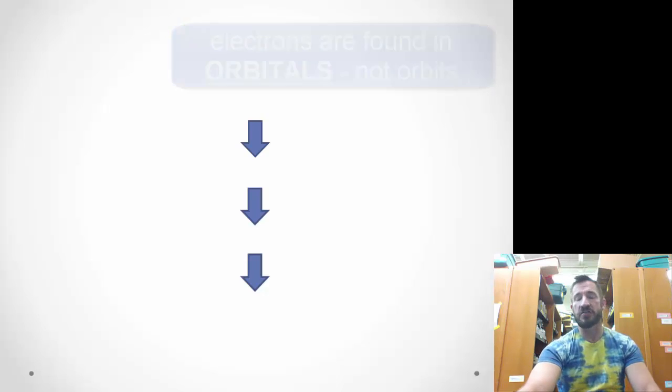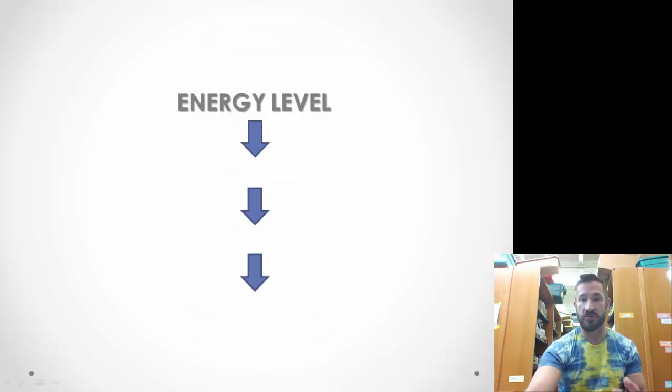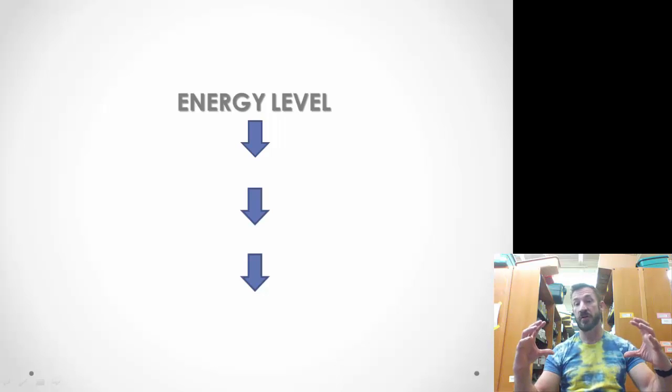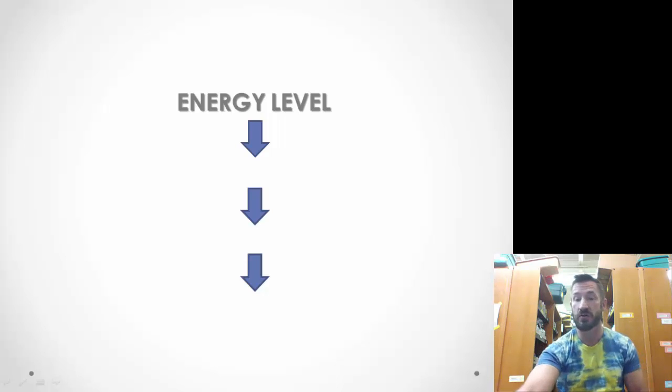Here are the levels or the order in which we'll go. First we have energy levels. That's how far or close it is to the nucleus. The lower the energy level, the closer to the nucleus; the bigger the number, the further away.